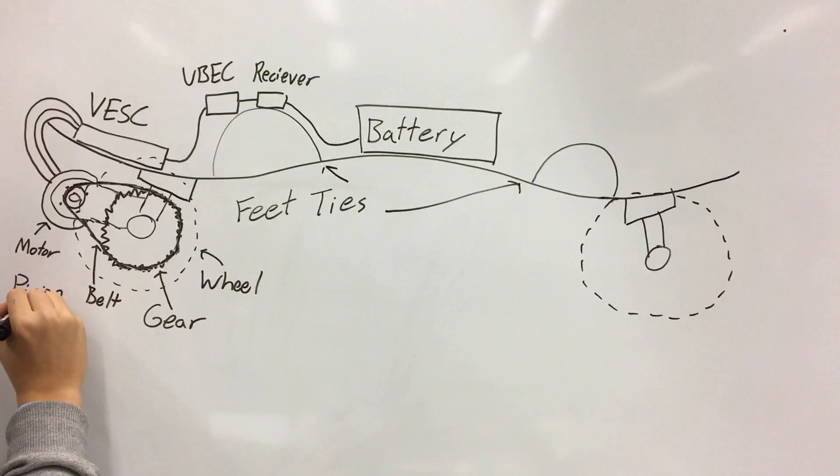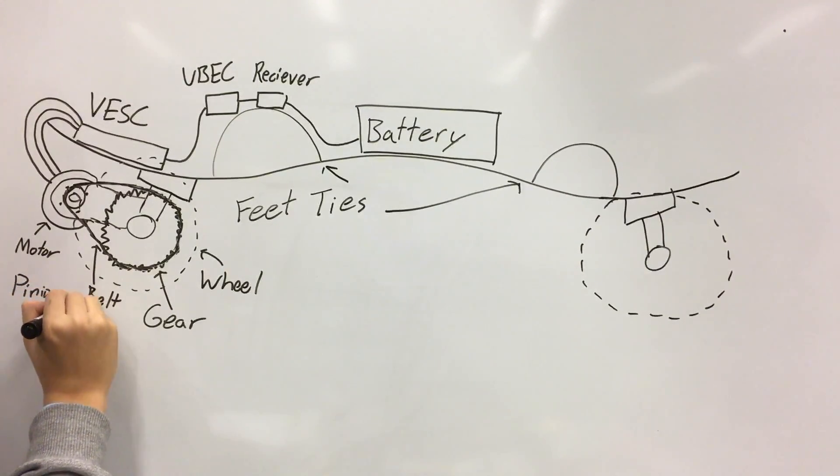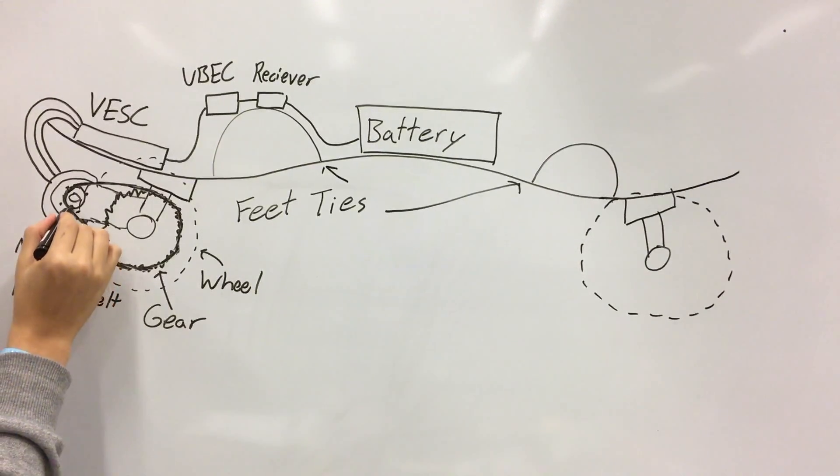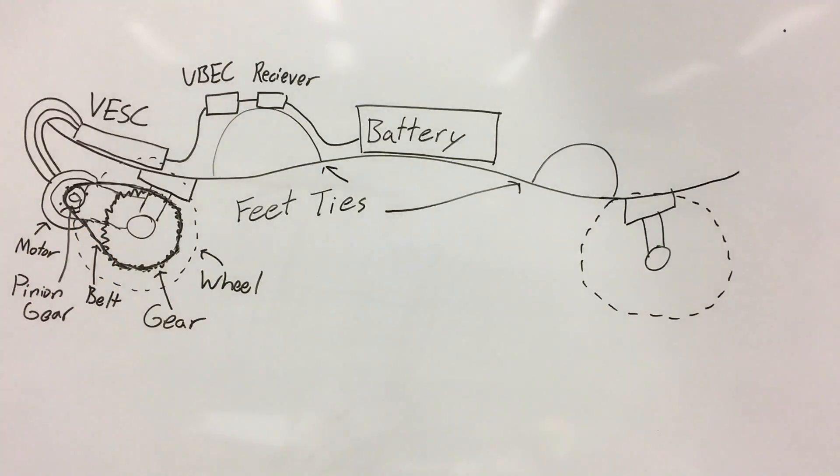But since I have so much speed, so much extra speed that I have no way of using, I tuned it so that the motor would use up more of the speed to power the skateboard and provide it with more torque instead of providing it with a higher top speed. Let's say, now after that you see on top the VESC.